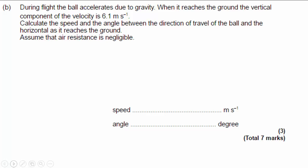Final part of the question. During flight the ball accelerates due to gravity. When it reaches the ground, the vertical component of its velocity is 6.1 meters per second. We can imagine the ball got whacked this way at 23.2 meters per second, which is what we calculated previously, follows a parabolic curve, something like this.